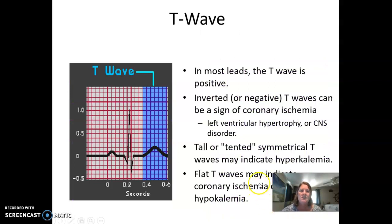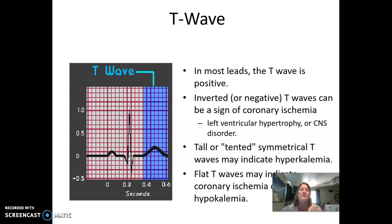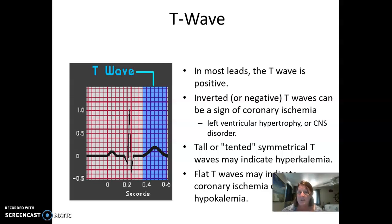The T wave in most leads is going to be positive — upward. Inverted or negative T waves can be a sign of acute coronary ischemia, but may also be seen with bundle branch blocks, conduction defects, left ventricular hypertrophy, or central nervous system disorders. Really tall or tented symmetrical T waves can indicate hyperkalemia. Flat T waves can indicate hypokalemia. So T wave morphology is important to keep in mind.